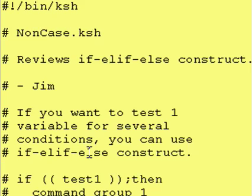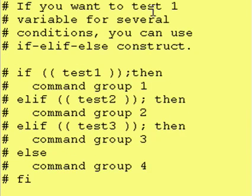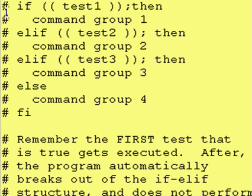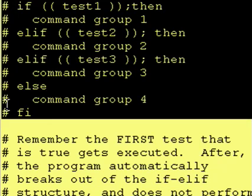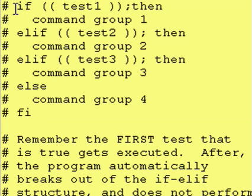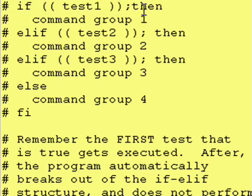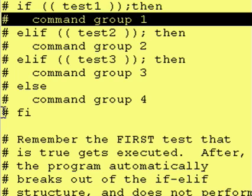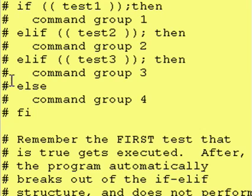So here we go. If you want to test one variable for several conditions, you can use an if-else-if-else construct. And just to review, this is what it would look like. Obviously these are commented out because this is just for educational purposes. You would have an if statement, and if this test is true, then you execute the then to the else if — whatever is in between the two gets executed — and then you would go down to the fi and start execution of the program from then on in, skipping over everything else.